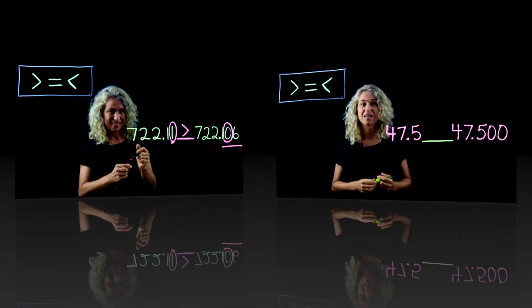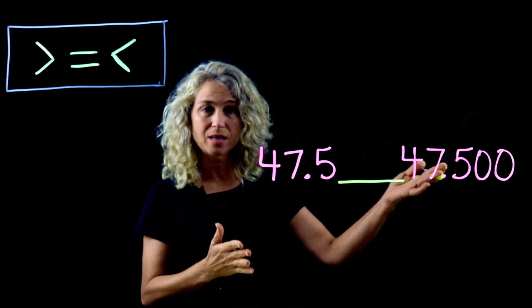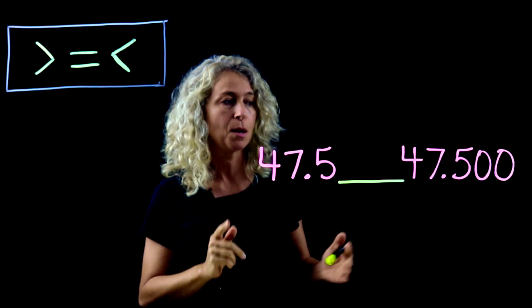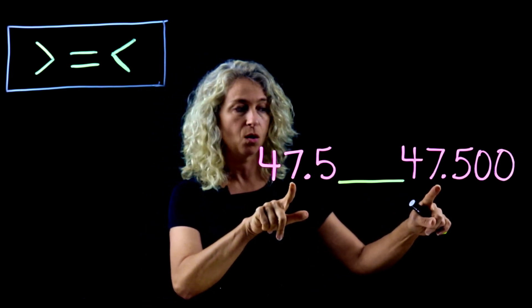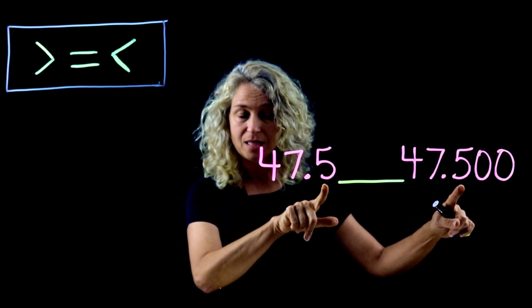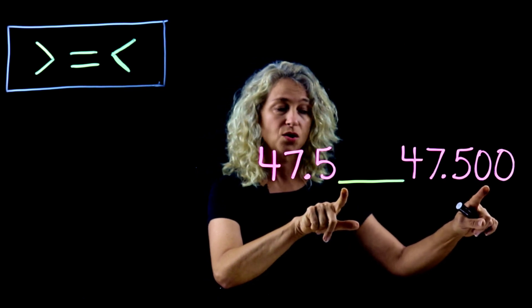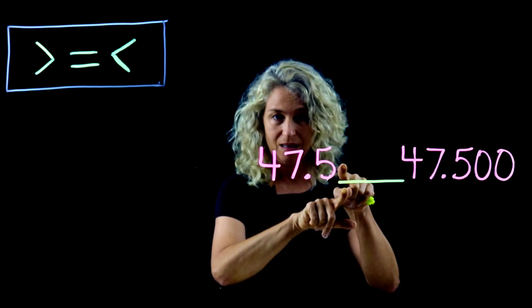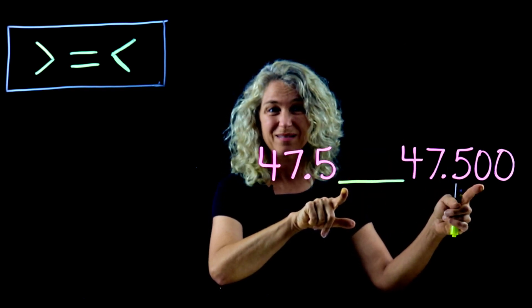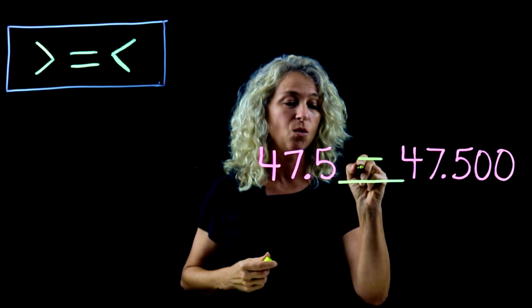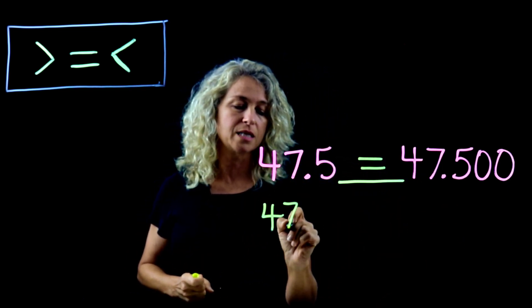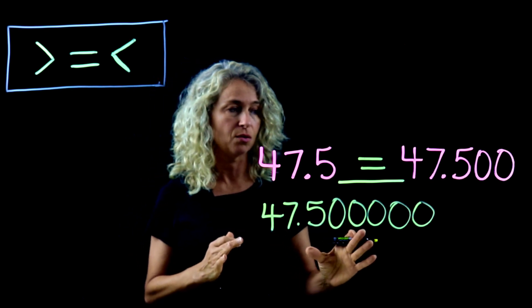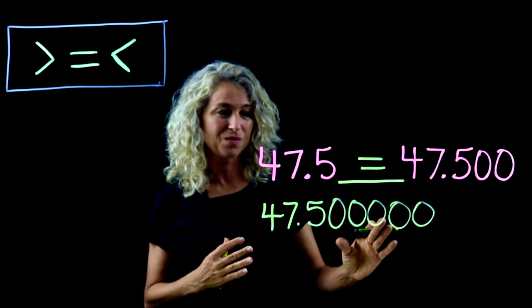Let's compare these two decimal numbers to see if they are greater than, equal to, or less than. Start with the greatest values: tens place — the same; ones place — the same; tenths place — the same. Move over to the hundredths place and notice that there's a zero here and nothing here. Nothing means zero, so these two are equal. On this number — forty-seven point five — we could add additional zeros and it wouldn't change the value.